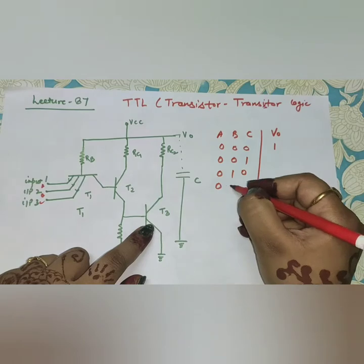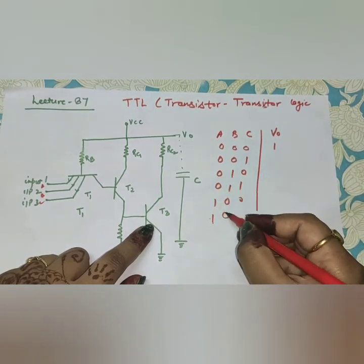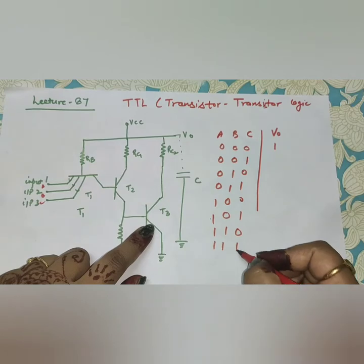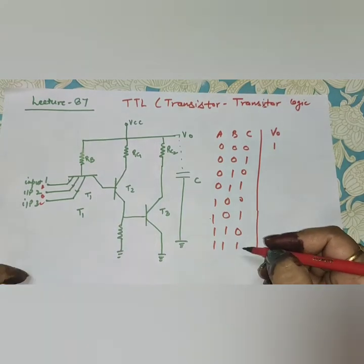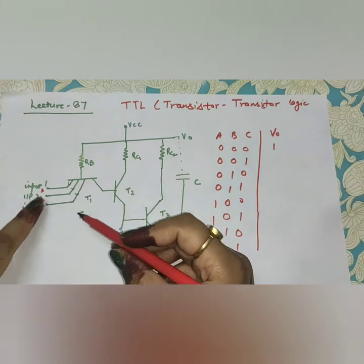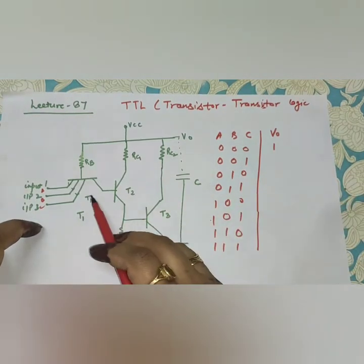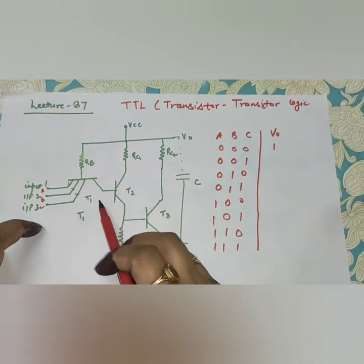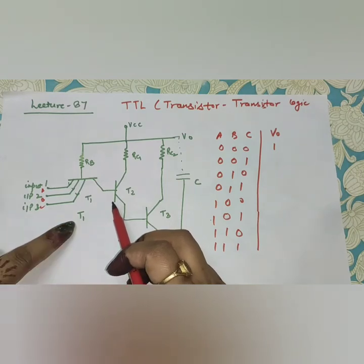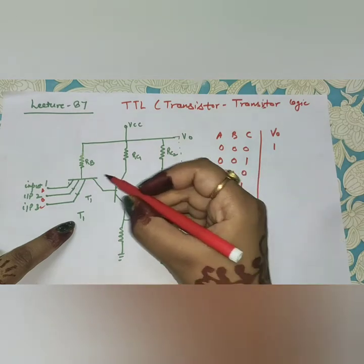For three inputs there are eight possible conditions: 010, 011, 100, 101, 110, and 111. If any input is zero, the output will be one, because the collector current of T1 will be zero. If the collector current of T1 is zero, T2 and T3 will be off.